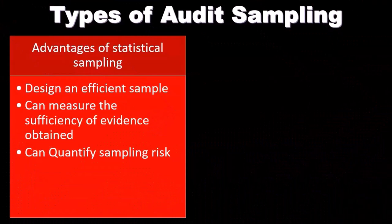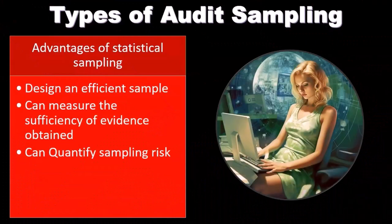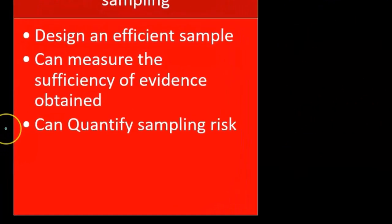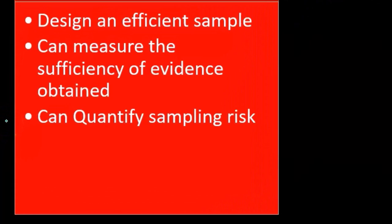Without statistical sampling, we would have to select a sample size that seems reasonable without being as efficient, which likely means overestimating the sample size and doing more testing than necessary. Statistical sampling can also measure the sufficiency of evidence obtained. Rather than simply noting what the evidence says, we can apply more accurate statistical measures to determine how reliable the sample is, as opposed to just applying the sample results to an assertion without further analysis.